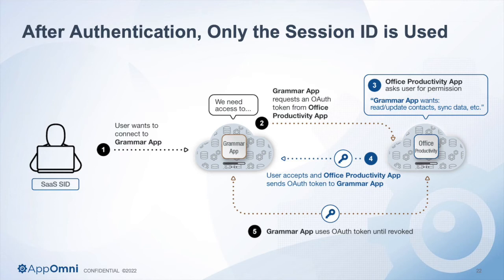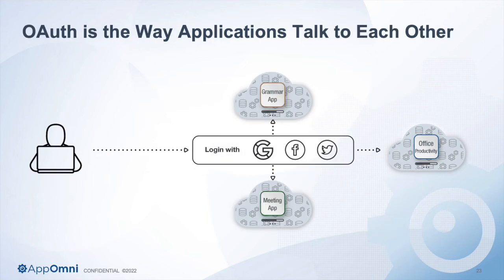This allows it to maintain API-based cloud-to-cloud communication without me ever having to log in again. The next day when I come into the office and do my single sign-on strong authentication, I don't have to re-authenticate the grammar app — it just keeps running in the background, because I've already granted it access once. This is not a bug, this is a feature. This is the way applications are meant to talk to each other. Think about the apps on our phone for email — you authenticate once and in the background, whether you're at home, at work, or at the airport, it's syncing your email.